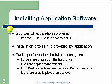Installing application software. Sources of application software include the internet, CDs, DVDs, floppy disks, and also maybe flash drives. An installation program is provided by the application — every application has some kind of installation program to install it into the OS.